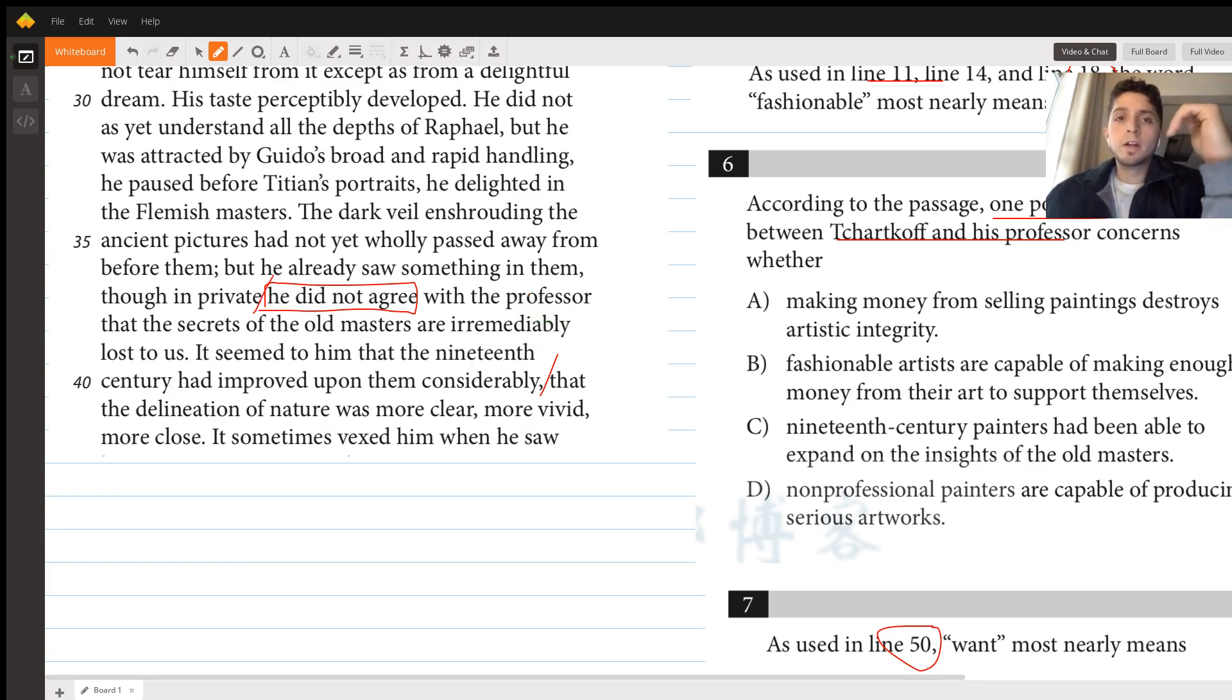Here's what he says: basically, he doesn't agree with the professor that all the secrets of the old masters or the abilities and skills that they had are irremediably—that means forever—lost to us. He actually thinks that those in the 19th century who came after actually improved upon them.